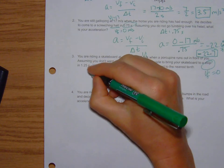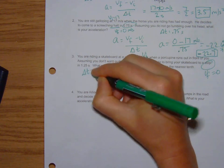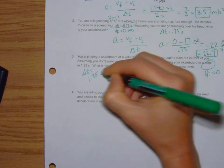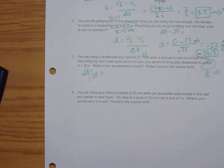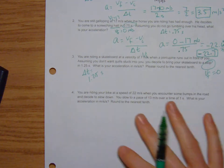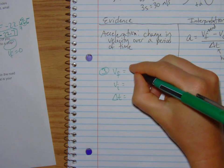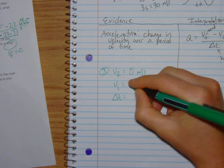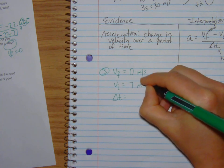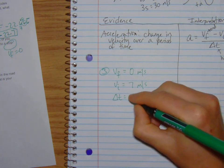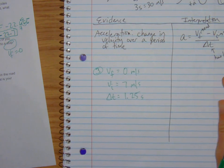And it takes 1.25 seconds, so the change in time is 1.25 seconds. What is your acceleration? Please round to the nearest tenth. So we have a final velocity of 0, we have an initial velocity of 7 meters per second, and our change in time is 1.25 seconds.